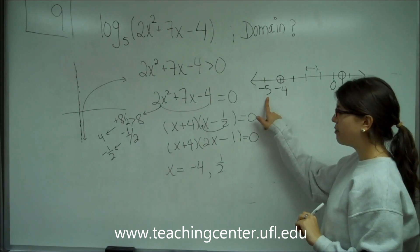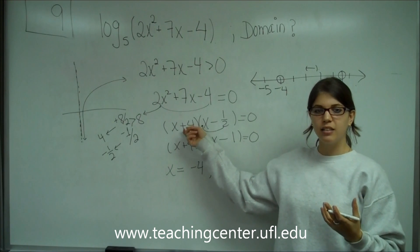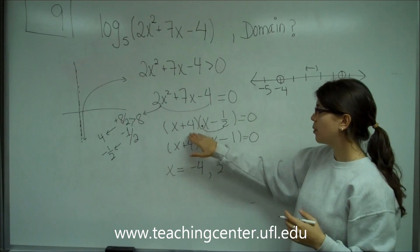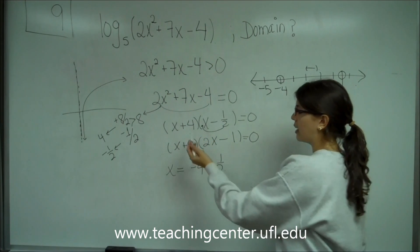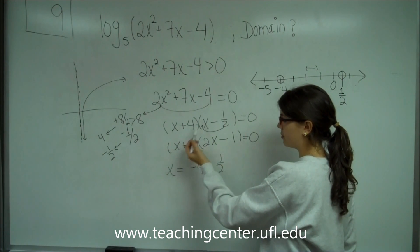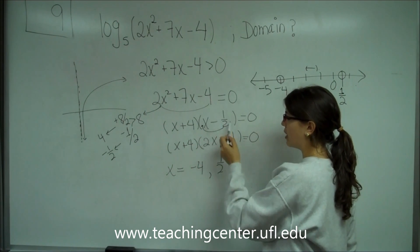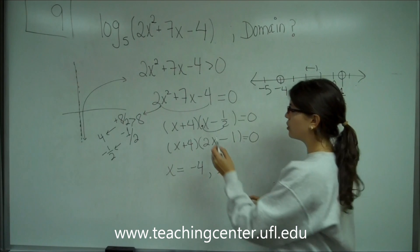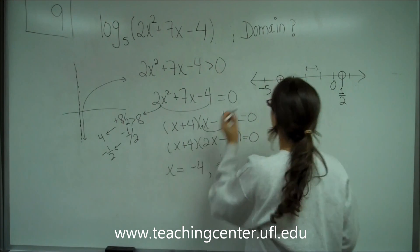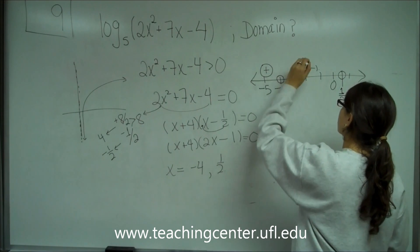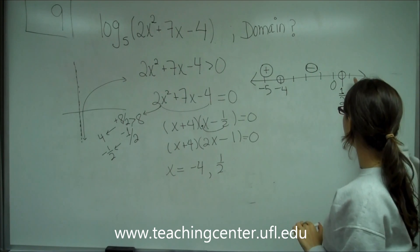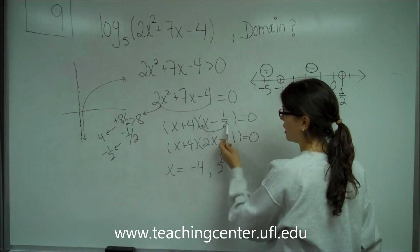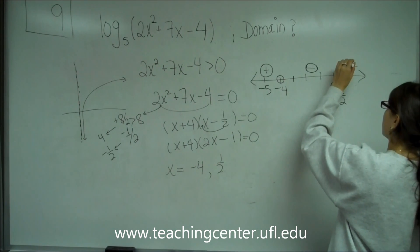Let's plug in negative 5. I'm plugging into the factored form because it's simpler. So I get (−5 + 4)(−5 − 1/2) = (−1)(negative number), which is a negative times a negative — that gives a positive number on this side. Then if I plug in 1, I get (1 + 4) which is positive, and (1 − 1/2) which is also positive. So on the right side of one half, I also have a positive.